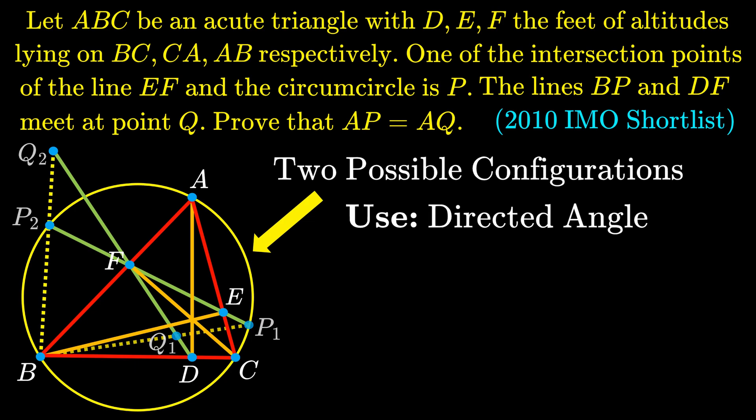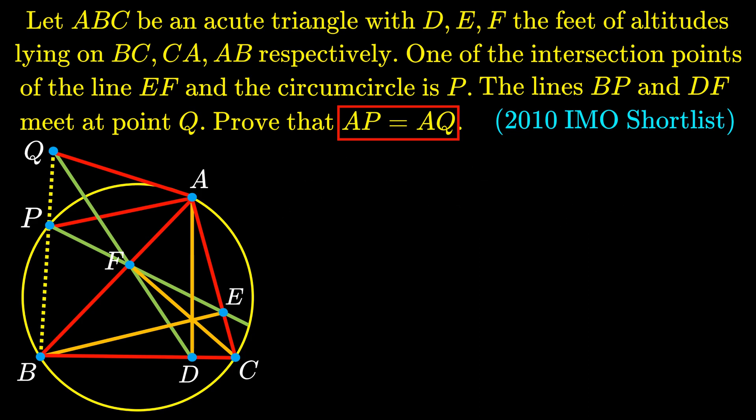So let's just take one of the intersection points to be P and work with it to show that the length AP is equal to the length AQ. We shall use angle tracing to show that the directed angle of AQP is equal to the directed angle of QPA, since using angles is a good way to show that two lengths are equal.